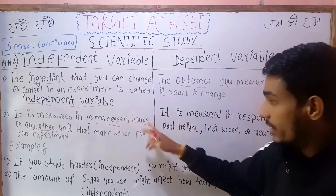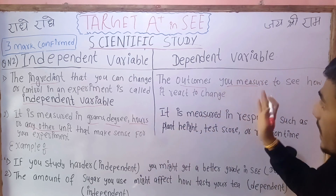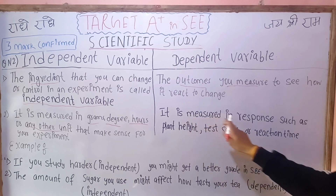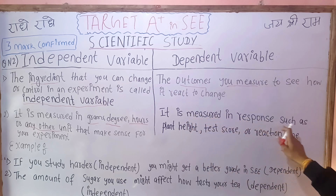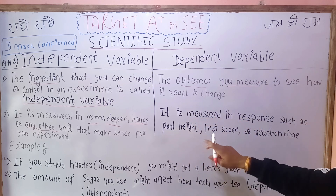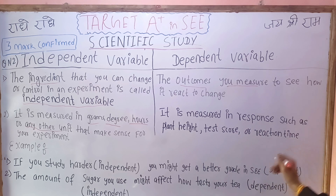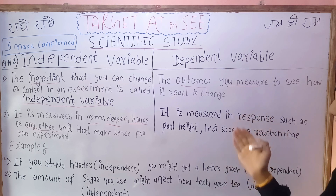The dependent variable is measured in response, such as plant height, test scores, or reaction time.